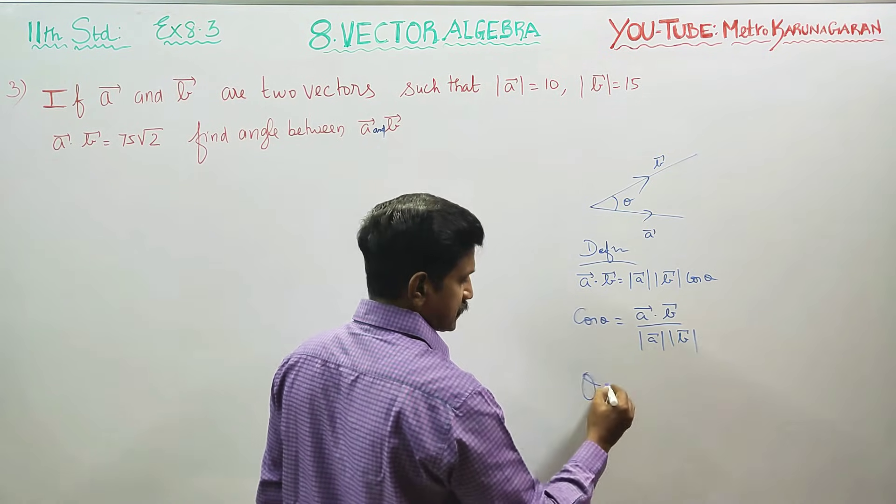cos inverse of A dot B, which is 75√2, divided by magnitude of A which is 10 times magnitude of B which is 15. This gives us 75√2 over 150.